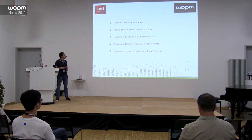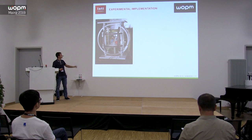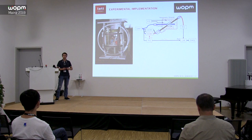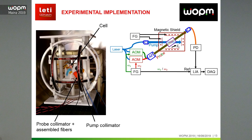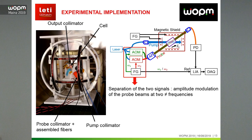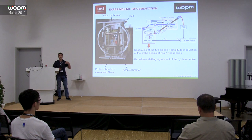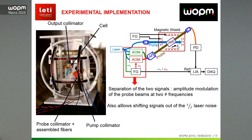Now I will show the experimental implementation of such a scheme. The experimental setup is placed inside a magnetic shield, with the helium cell in the middle. The pump collimator is horizontal, the probe collimator is oriented at 35 degrees beneath it, and the output collimator gathers the probe light at the output of the cell. As shown in the synoptic diagram, we perform optical amplitude modulation of the probing beam so that we can separate the two different polarizations and the signals proportional to both the Bx component and the By component, which also shifts the signal out of the low-frequency laser noise.